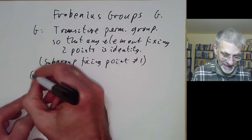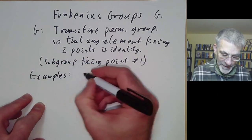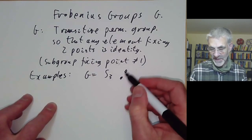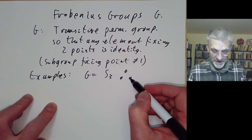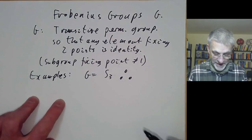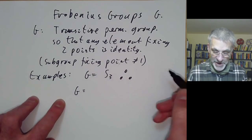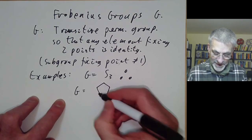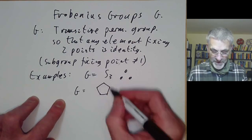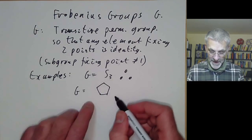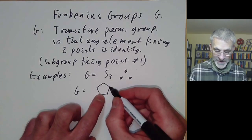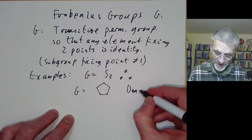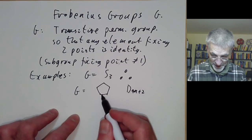Here are some basic examples. We could take G to be the symmetric group S3 acting on three points — if any element fixes two of these points it obviously fixes the third, so it's the identity. Another example is the dihedral group on 4N+2 points. For instance, the group of automorphisms of a pentagon: if you fix any two vertices of the pentagon then the entire pentagon is fixed. So the dihedral group on 4N+2 points is a Frobenius group.